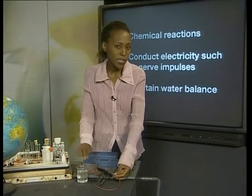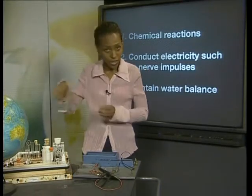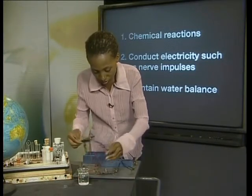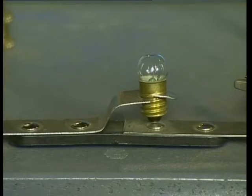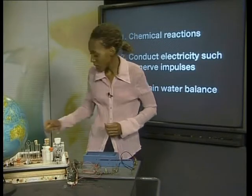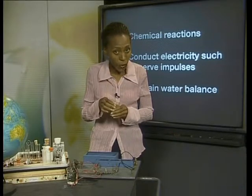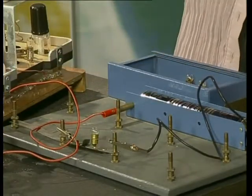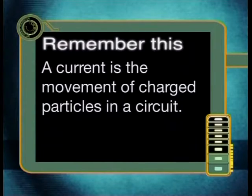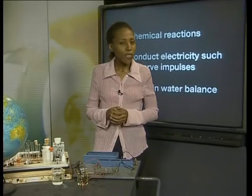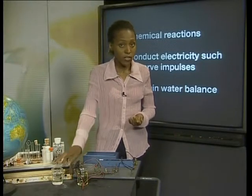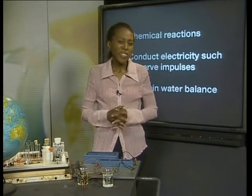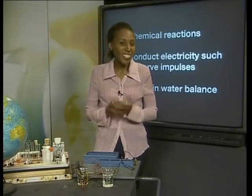If we try this with another dissolved substance, for example sugar dissolved in water — there is no current in this circuit. In this beaker we have cooking oil — again, there is no current. A current is the movement of charged particles in a circuit. Covalently bonded substances such as sugar and oil do not conduct electricity; there are no charged particles formed when they dissolve. When ionic substances such as sodium chloride dissolve, positive and negative ions are free to move, and the movement of these ions causes the electric current.